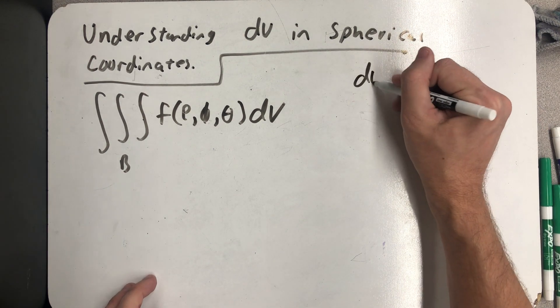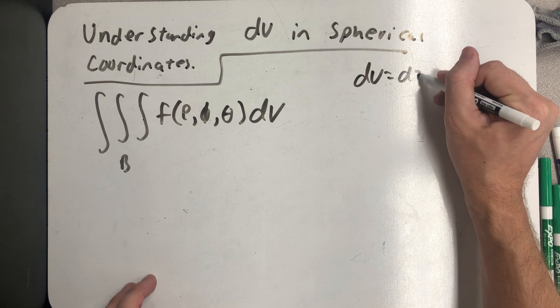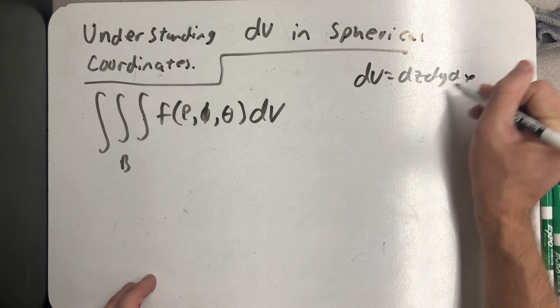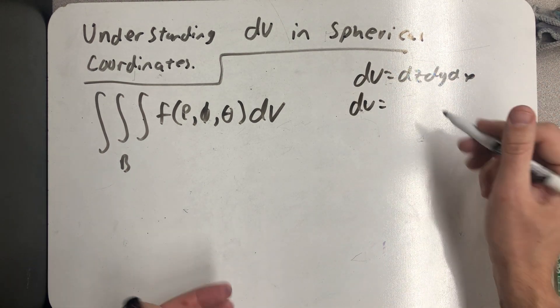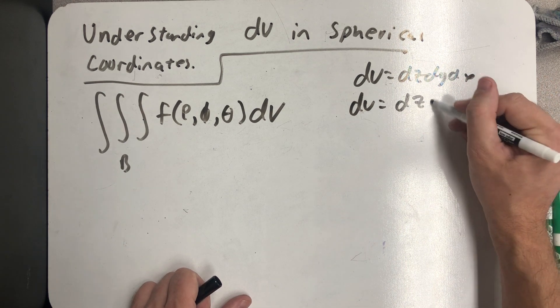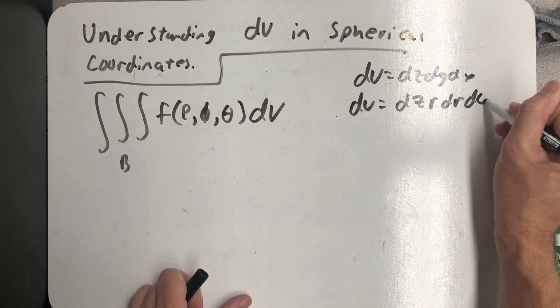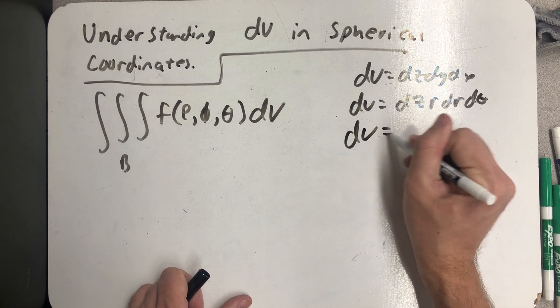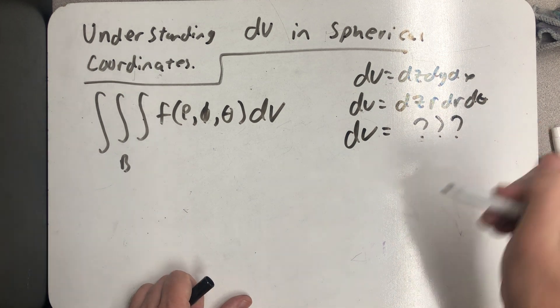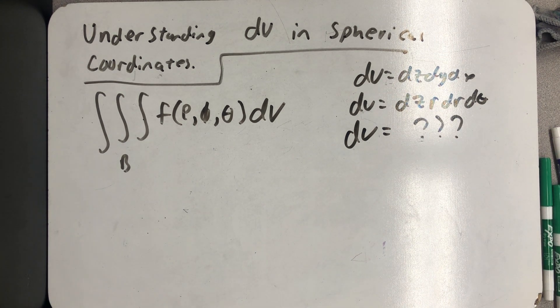We know in rectangular coordinates we can write that as dz dy dx. In cylindrical coordinates we know we can write that as dz r dr dθ. And in spherical coordinates we have to figure out what we'll list it as.